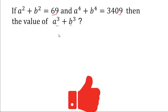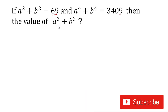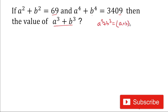Let's start the video. Here we have to calculate the value of a³ + b³. We have the values of a² + b² as well as a⁴ + b⁴. The formula of a³ + b³ in terms of (a+b) and ab is: a³ + b³ = (a+b)(a² + b² - ab).